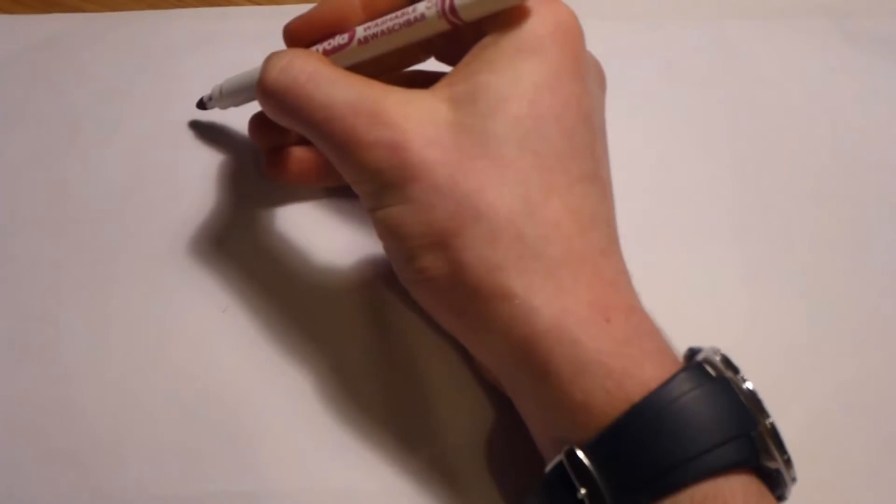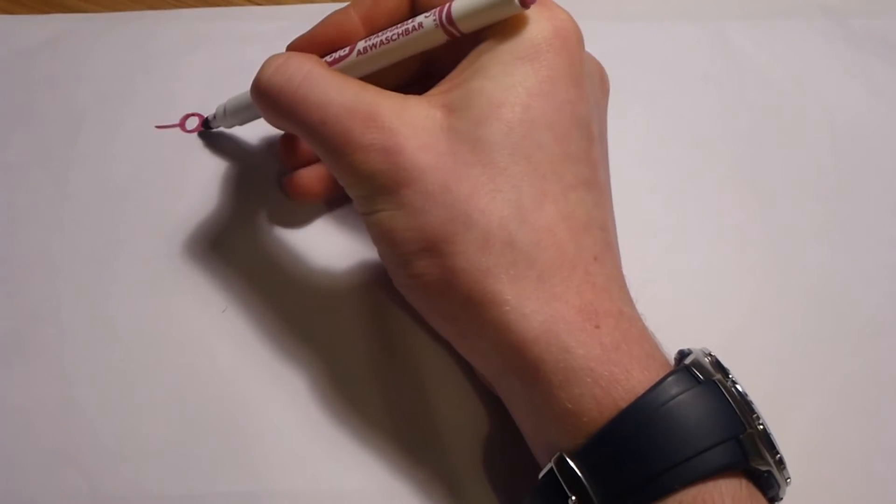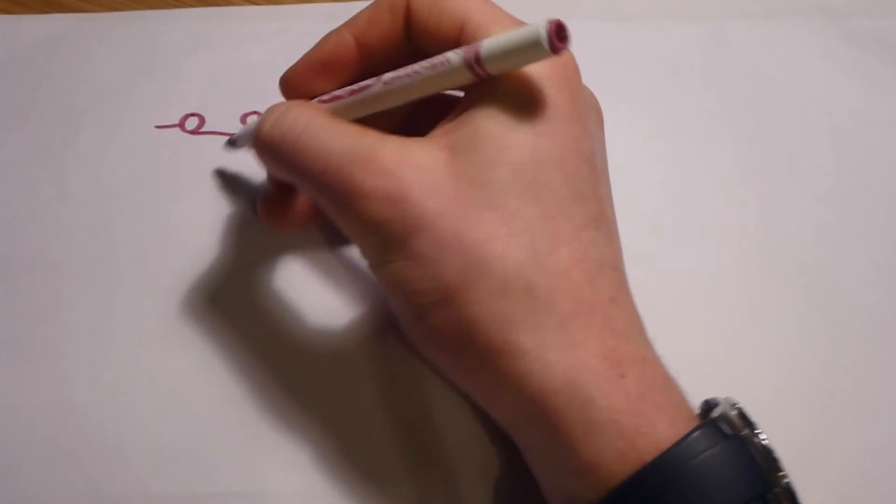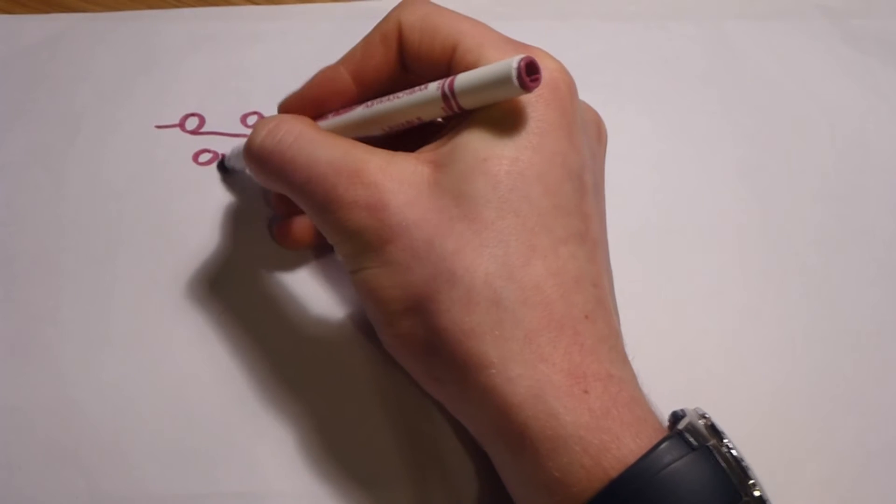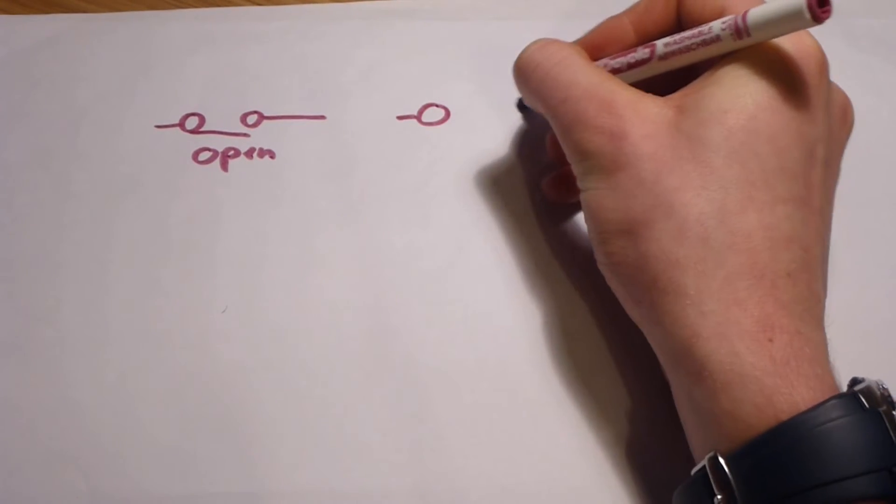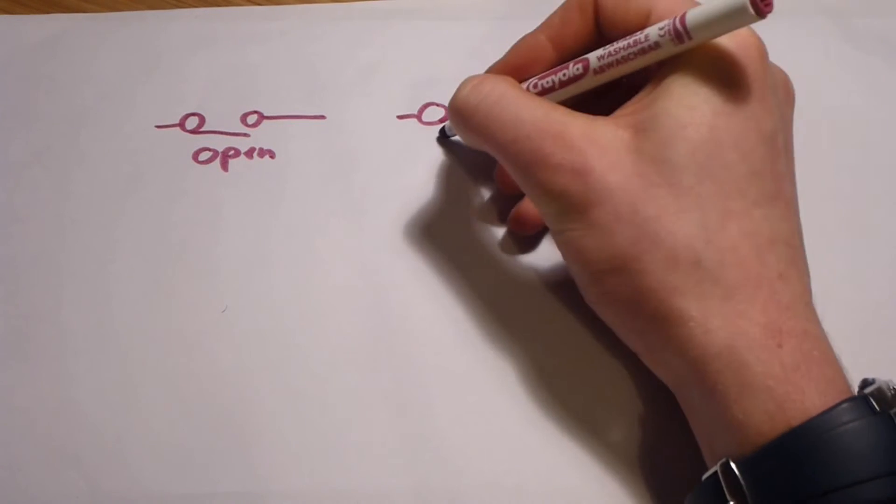So we'll start with a switch. A switch can be drawn in two ways. Can be drawn here, which is open, and this way, which shows it being closed.